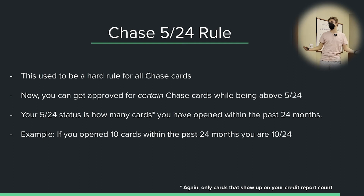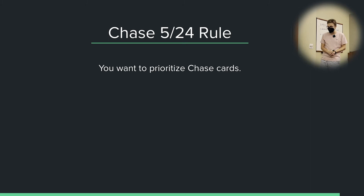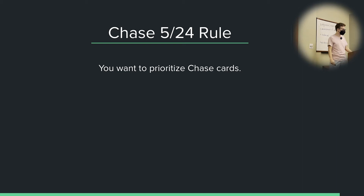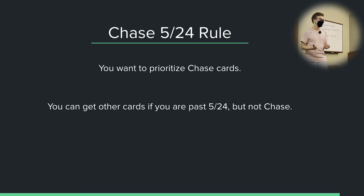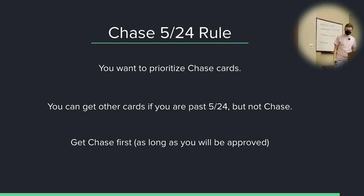Because of this, you want to prioritize Chase cards. Think about it as a buffet — you've got steak and lobster, and you love them both equally. Steak's going to be here 24/7, but the lobster's going away in five minutes. Grab the lobster first, get the steak later. You can get them both, but only if you get the lobster first. If I'm at 6/24, I can go get American Express cards or cards from other banks, but I can't get most Chase cards. So get Chase cards while you're below 5/24, get the other cards when you're above.